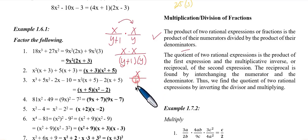Next, the quotient of two rational expressions. So if we have x over y plus 1 divided by x over y, the quotient is the product of the first expression and the multiplicative inverse or reciprocal of the second expression. The reciprocal is found by interchanging the numerator and the denominator.